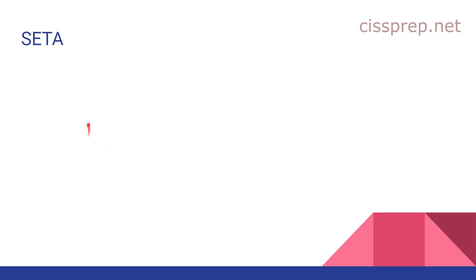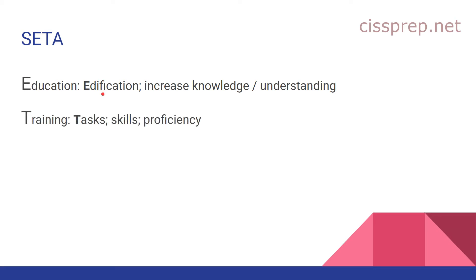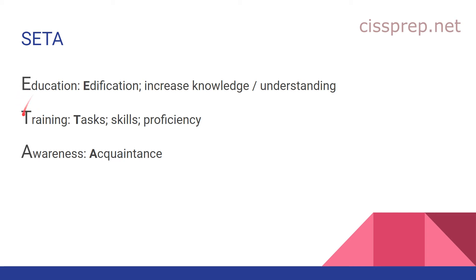There's a fairly big change with training and awareness. The acronym used to be SAIT but now it's SETA — security education, training, and awareness — they just rearranged it. Education refers to increasing your knowledge and understanding — a mnemonic for this is 'edification.' Training focuses on improving your skills and proficiency with certain tasks, so it's very task-focused. Awareness is how well acquainted someone is with the education and training needed — essentially how aware the employees are. The big change here is that they've gotten rid of any notion of formality — before, education was formal, training semi-formal, and awareness informal — all that's gone now.